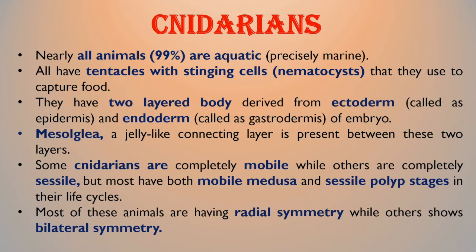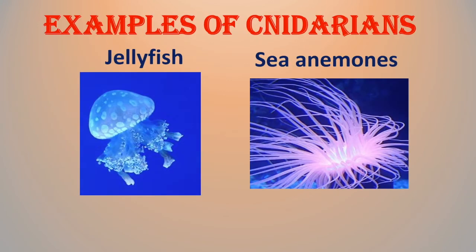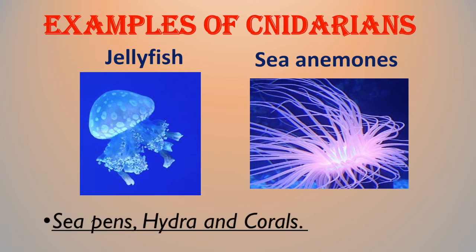Mesoglea, a jelly-like connecting layer, is present between these two layers. Some cnidarians are completely mobile while others are completely sessile, but most have both mobile medusa and sessile polyp stages in their life cycles. Most of these animals have radial symmetry while others show bilateral symmetry. Well-known examples are jellyfish and sea anemones. Other examples are sea pens, hydra, and corals.